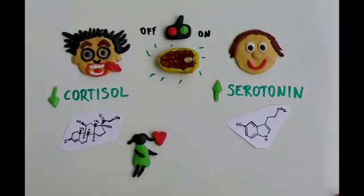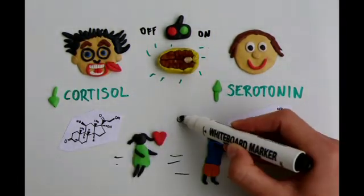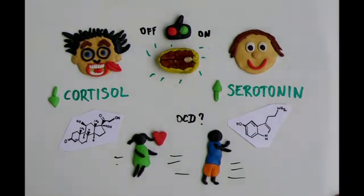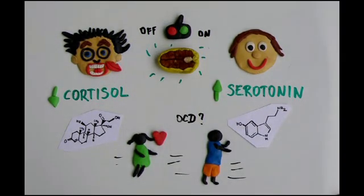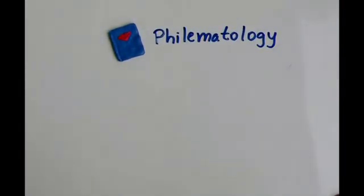Some scientists believe that the obsessive behavior we show when we kiss and like someone is due to the high levels of serotonin, as similarly high levels of serotonin have been found in patients suffering from OCD. Cool, right? Well, there is much more to philematology than this.